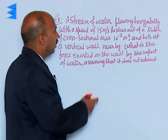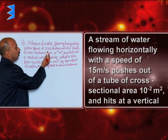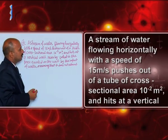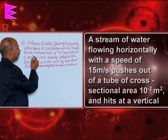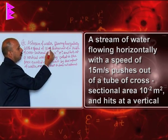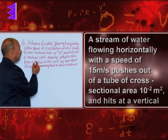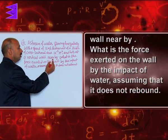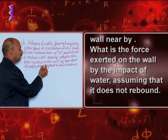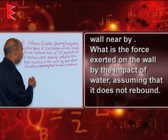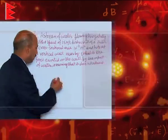See in this example: a stream of water flowing horizontally with a speed of 15 meters per second pushes out of a tube of cross-sectional area 10 raised to power minus 2 meter square and hits a vertical wall nearby. What is the force exerted on the wall by the impact of water, assuming that it does not rebound?